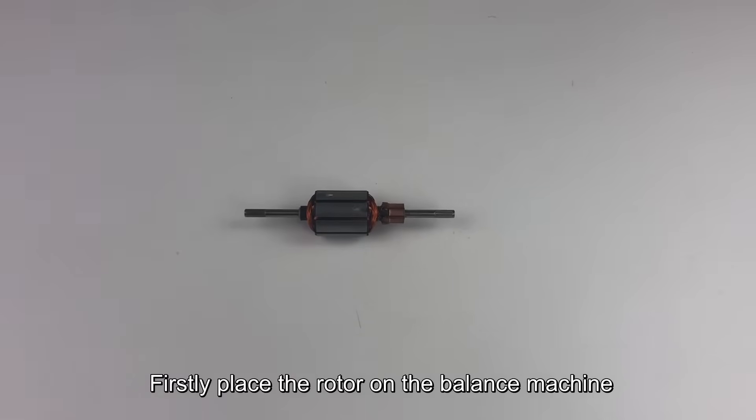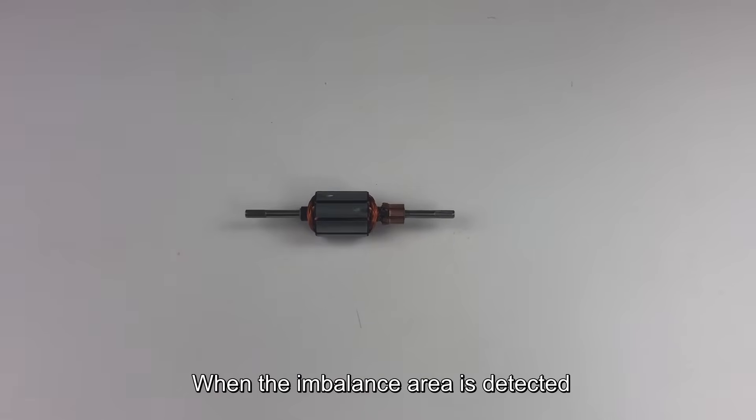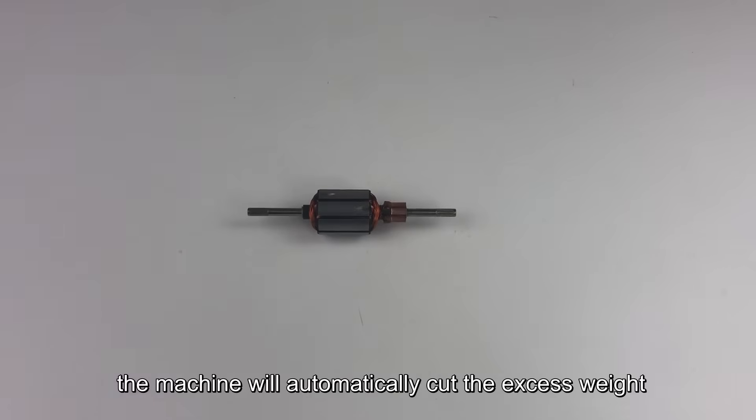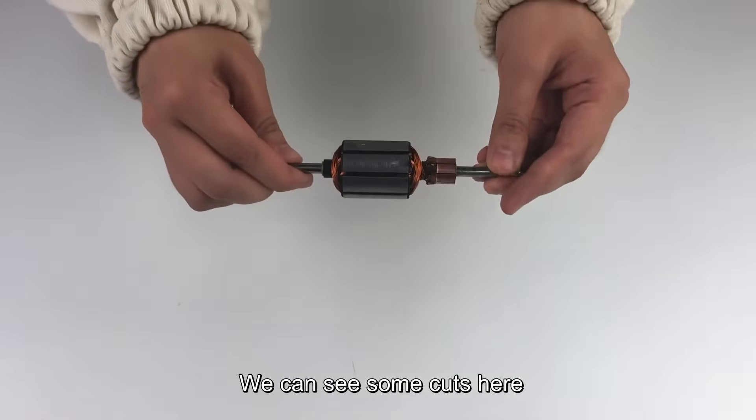First, place the rotor on the balance machine. When the imbalance error is detected, the machine will automatically cut the excess weight. We can see some cuts here.